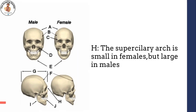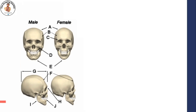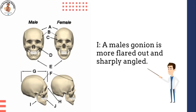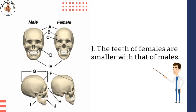H shows the supraciliary arch, which is larger and more pronounced in males than females. I is the gonion, the most posterior and inferior point on the angle of the mandible; in males it is more flared out and sharply angled compared to females. J shows the teeth: male teeth tend to be larger than females'.